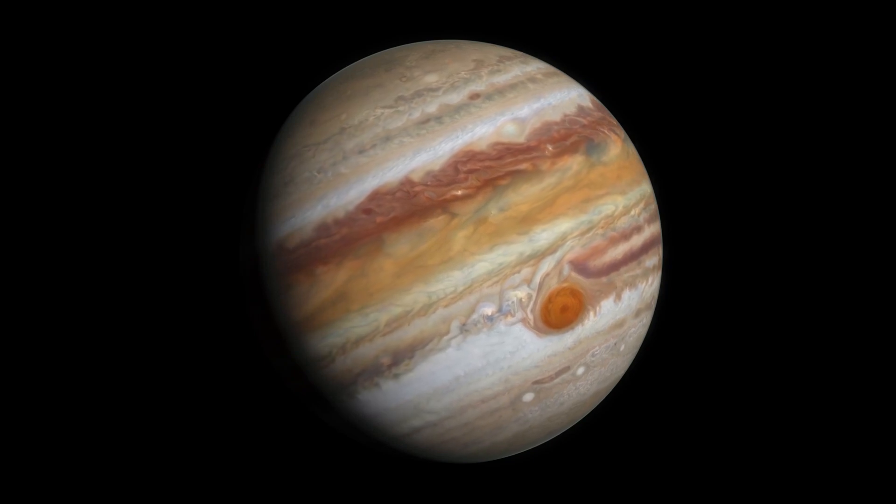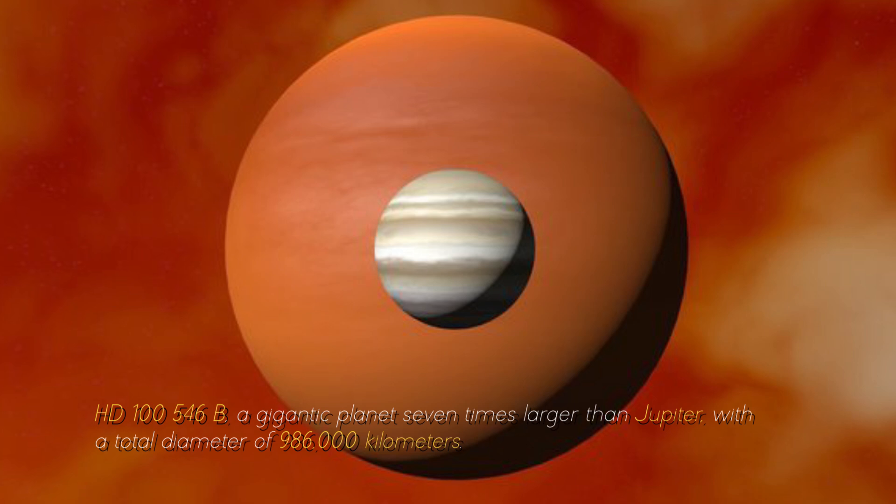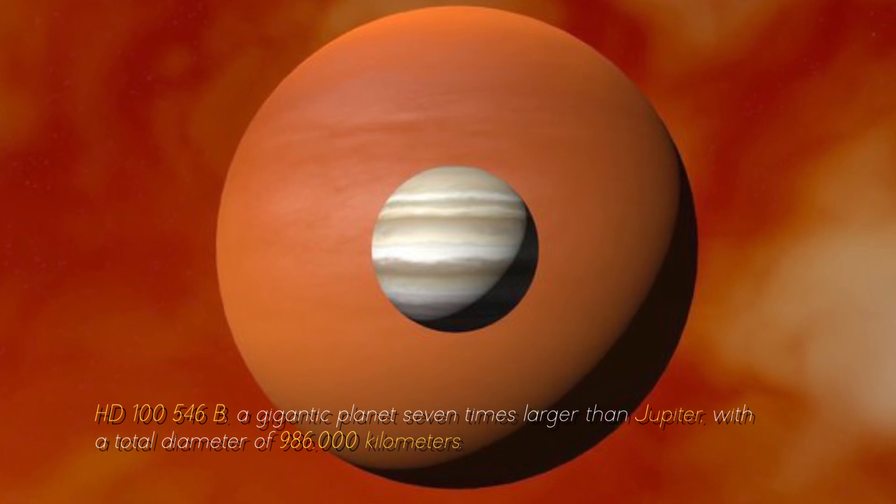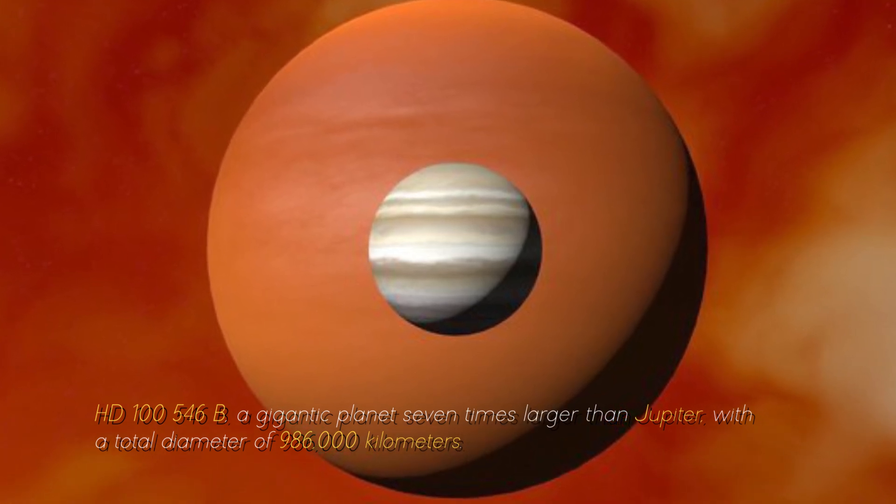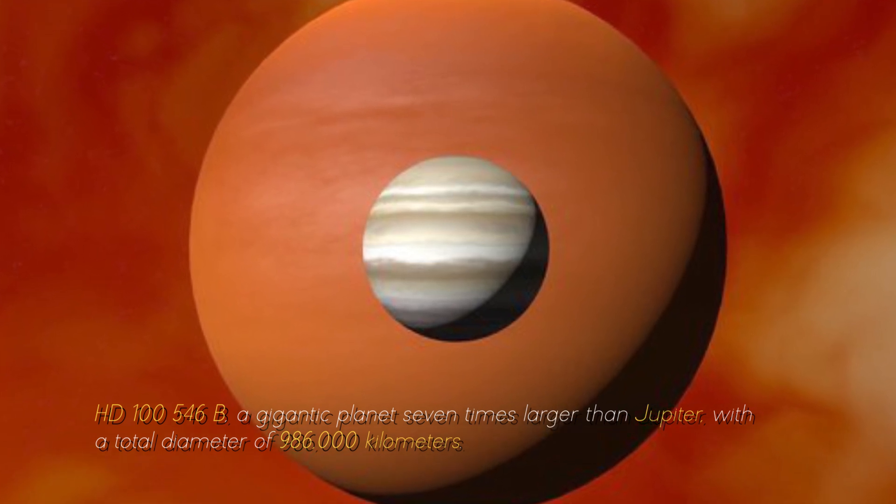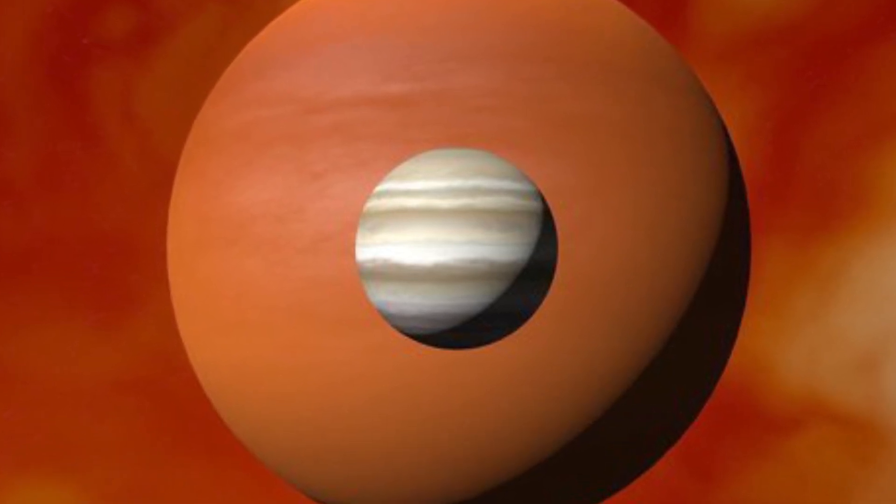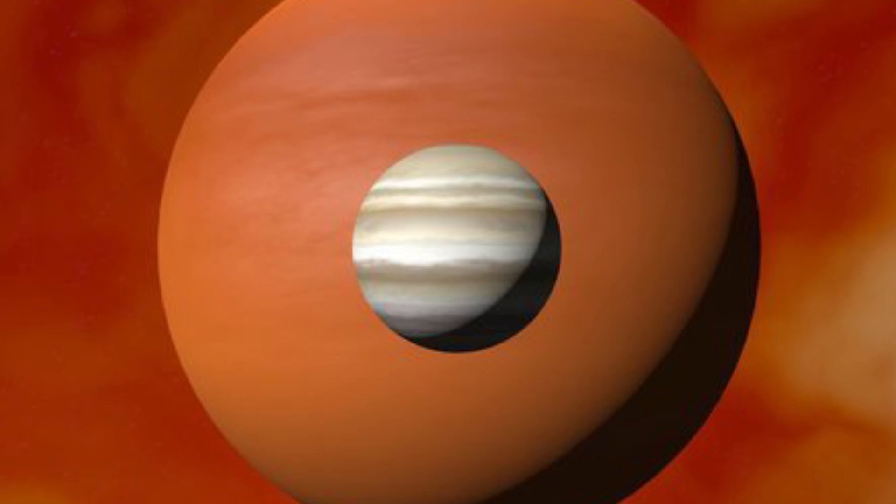Now, let's compare Jupiter with the largest planet in the known universe, HD-10546 b, a gigantic planet seven times larger than Jupiter, with a total diameter of 986,000 kilometers. You can imagine what Earth would look like near this cosmic monster, can't you?